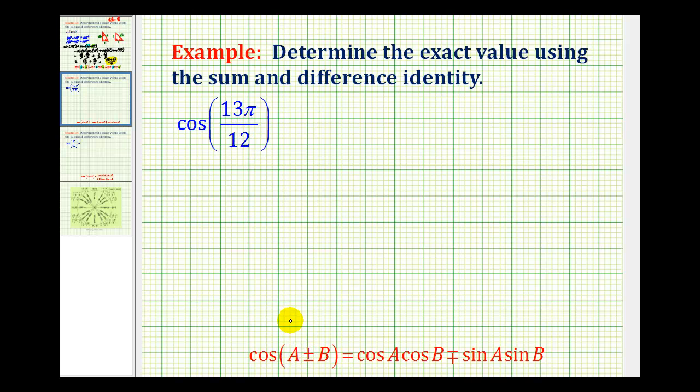The first step in this type of problem is to determine what two angles we can add or subtract which will equal 13π over 12 radians that have known function values. Angles that have known function values are the angles we see when we use the unit circle to determine function values.